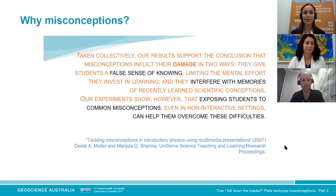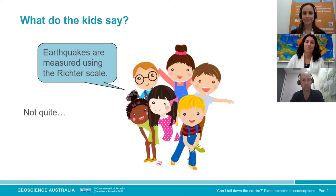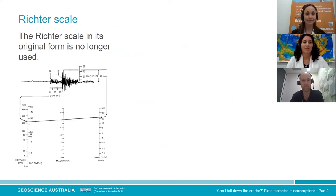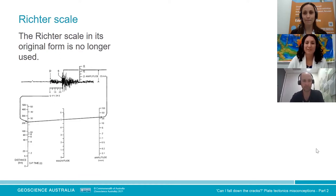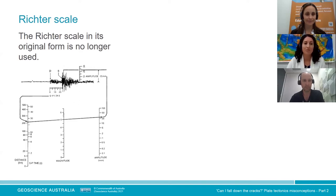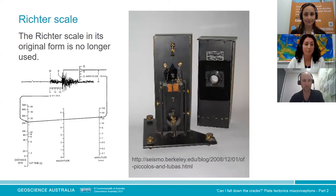Our first misconception is that earthquakes are measured using the Richter scale. Here's a picture of the Richter scale as published in Richter's book from 1958. It's really just a mathematical device, creating a magnitude from the logarithm of the amplitude of the seismic waves in the recording — it has no basis in physics or the physical properties of the crust. The data had to be collected by a Wood-Anderson instrument, the seismograph had to be 100 kilometres or less from the earthquake, and it didn't work for earthquakes magnitude seven or over — the accuracy dropped off.